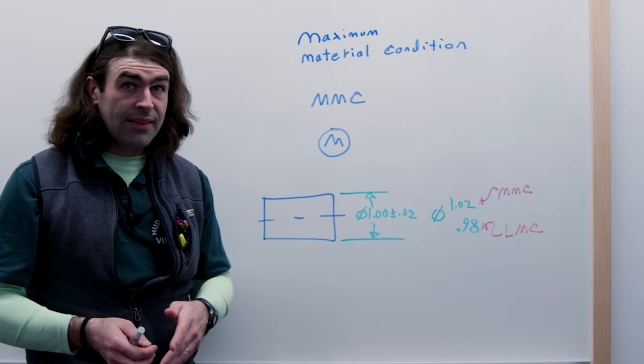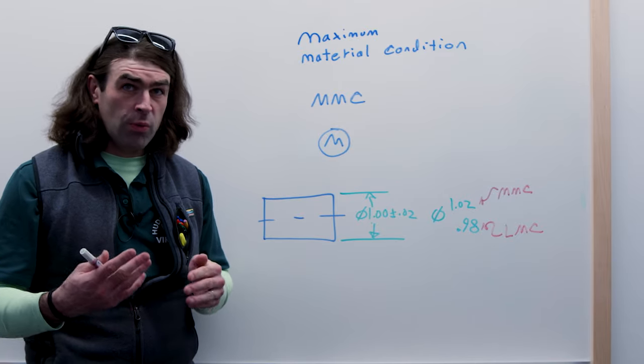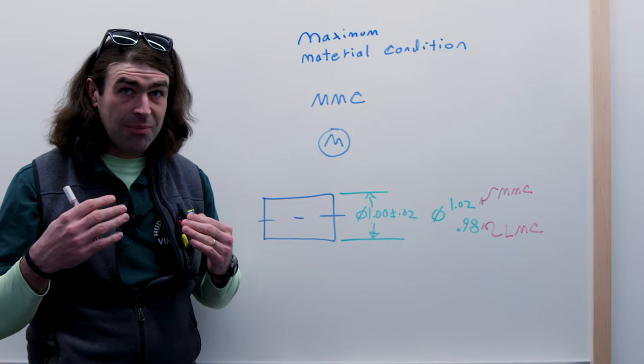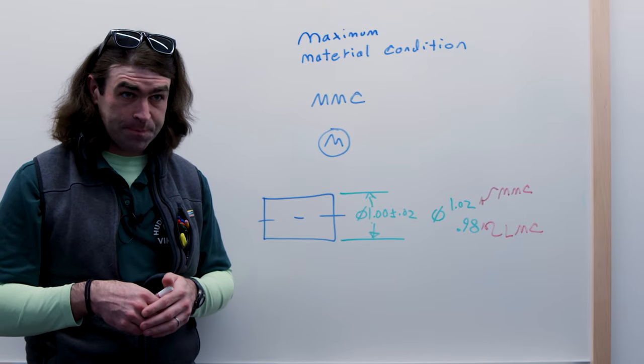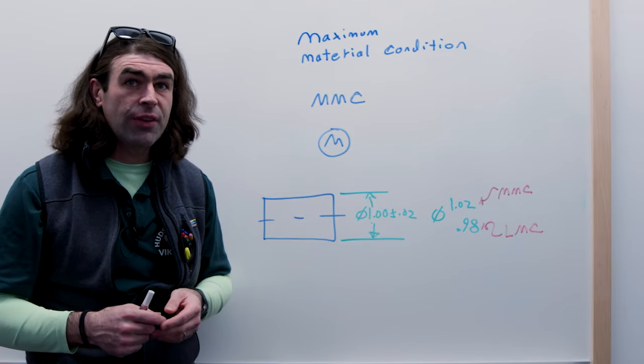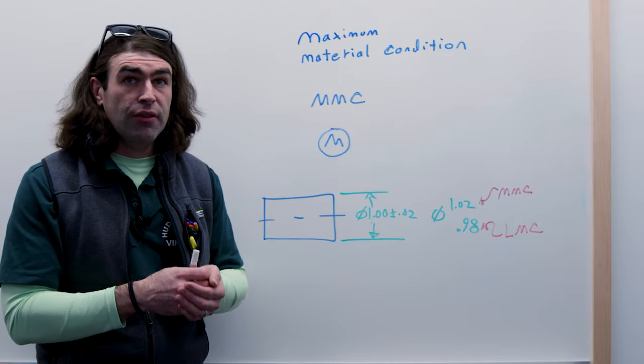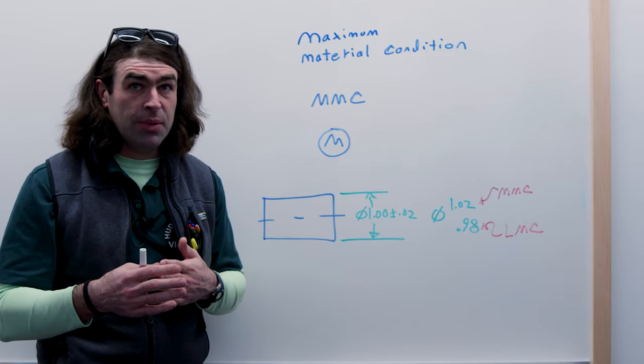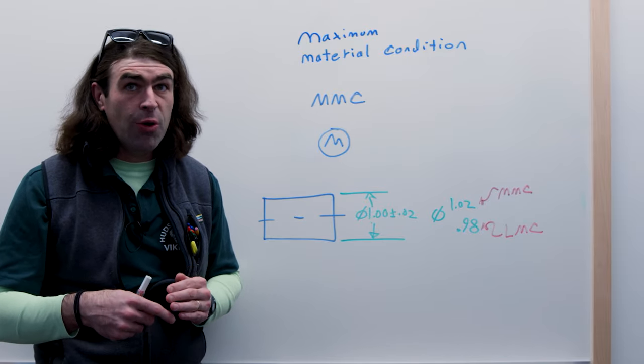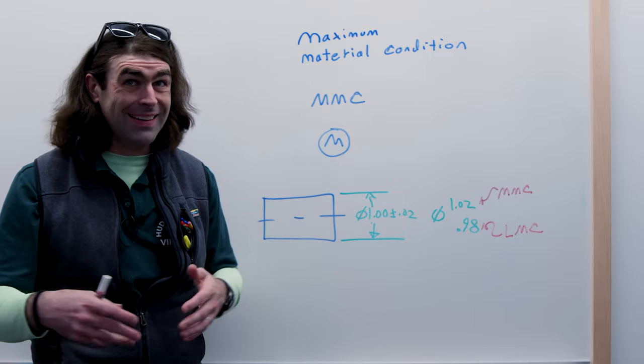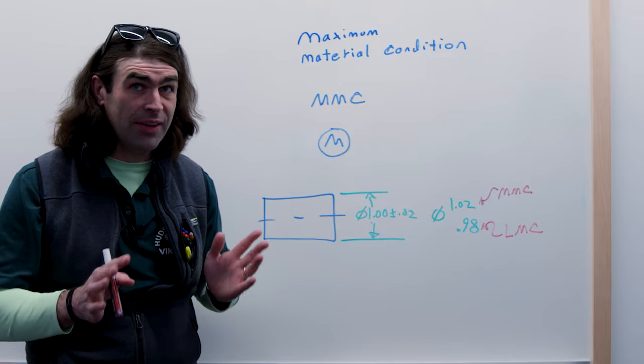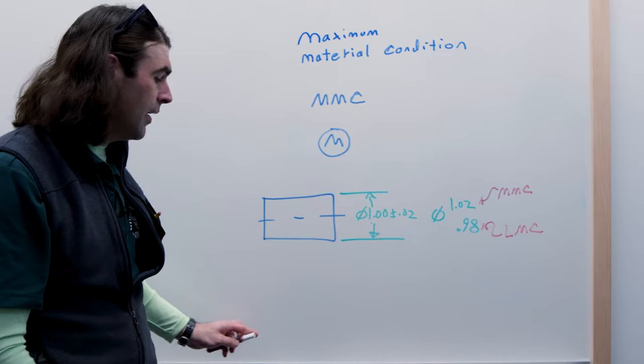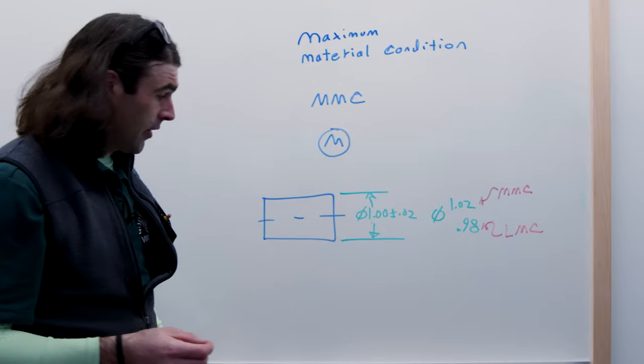So that's the concept. I'm not going to go into rule number one in this video, but at maximum material condition and any regular feature of size, you have to have perfect form in the ASME system. In ISO you don't. That's a big difference between the two symbols, but I'll save that for another video here. What's the next use case? Let's take a look.